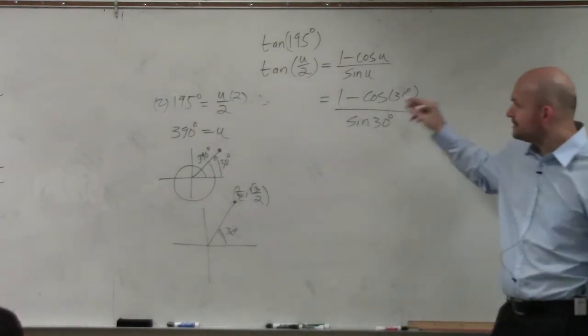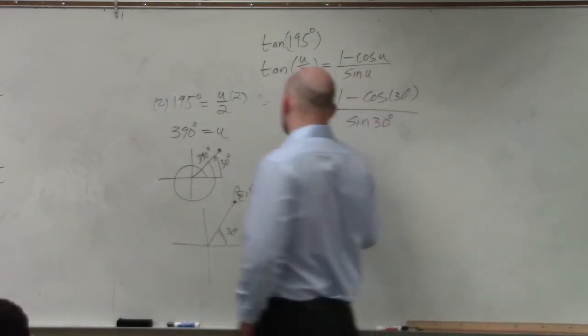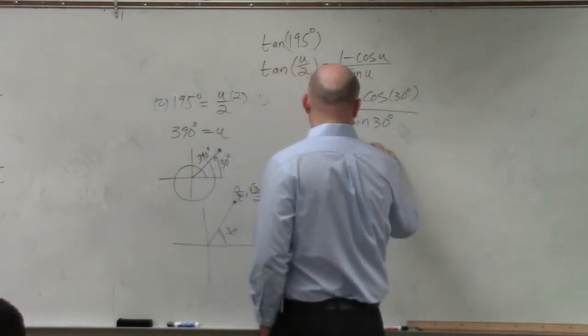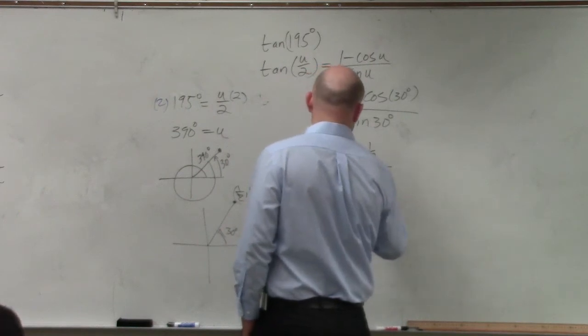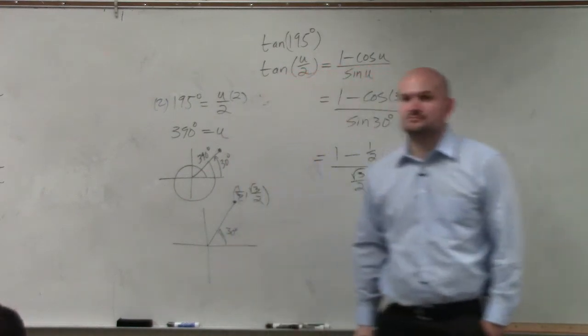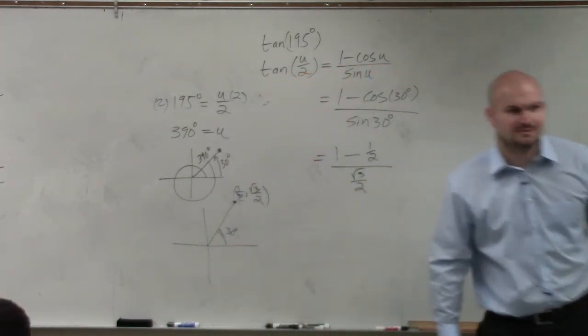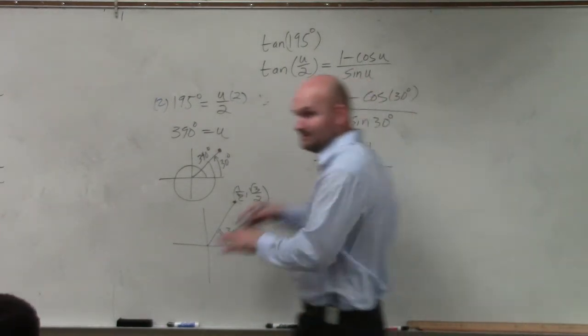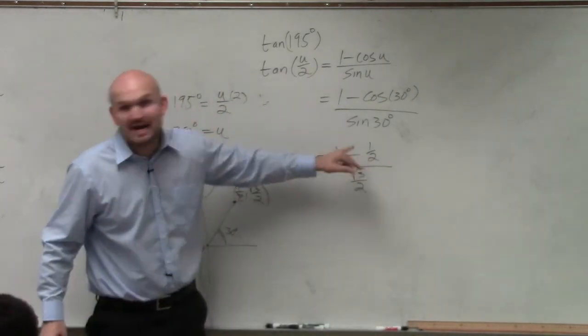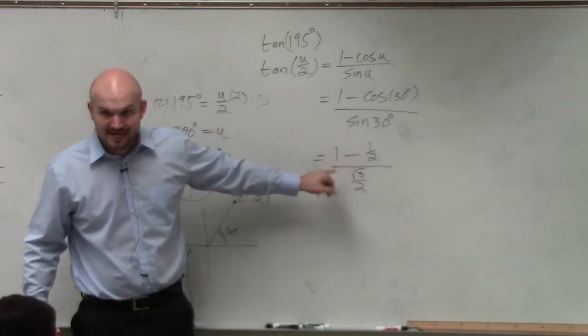So then we'll say that the cosine here is 1 minus 1 half all over square root of 3 over 2. OK. Let's look over here. Do you agree with me that I have multiple little fractions here? I have a fraction inside of a fraction, right?